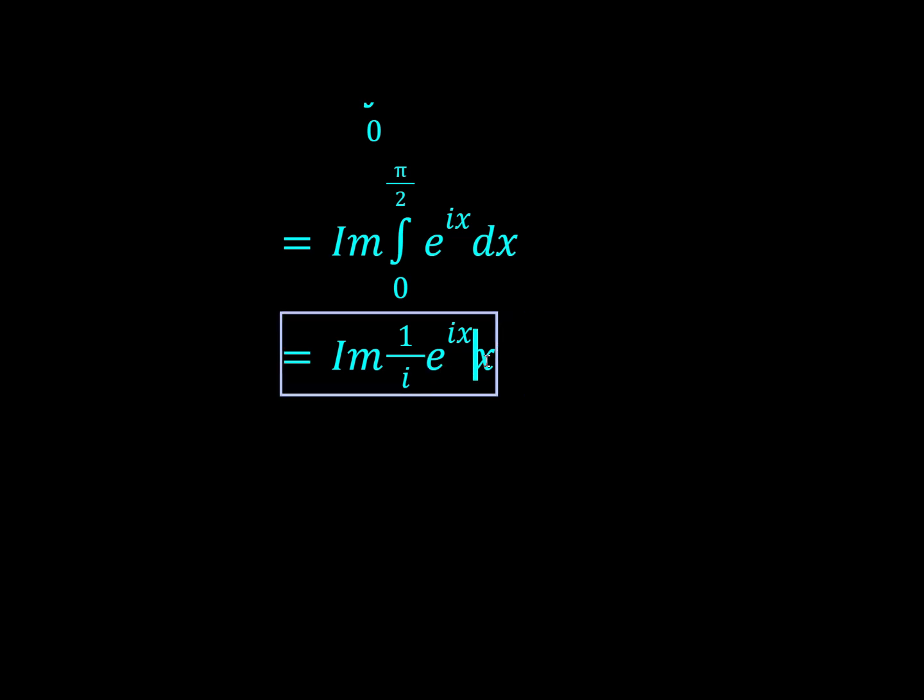Now this is just an integral of an exponential, very easy to do. So this would just be 1 over i times e to the ix evaluated from 0 to π/2. And that would just be the same as e to the i π/2 minus e to the i0. And e to the i π/2 is i.